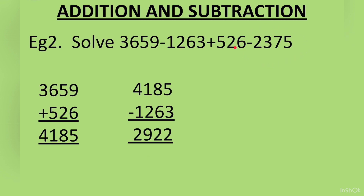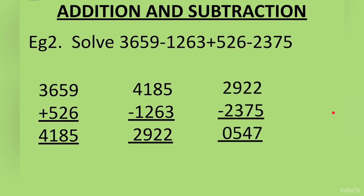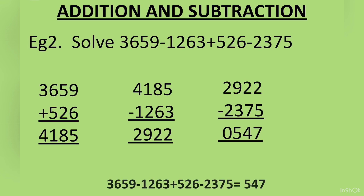So we will write 2,922 minus 2,375. Then we will get 547. We will write the answer in number sentence form: 3,659 minus 1,263 plus 526 minus 2,375 is equal to 547.